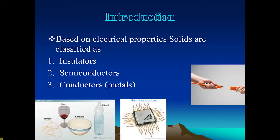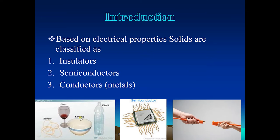Looking at the figures: the first figure shows insulators — plastic, glass, ceramic — which do not allow electricity or thermal energy to pass through. On the extreme right, the tip of a plug pin is made of metal, a good conductor, while the outer cover of the wire is an insulator. The central figure shows an IC chip made of semiconductor, whose conducting property lies in between those of conductors and insulators.